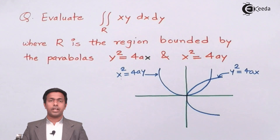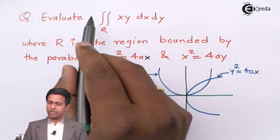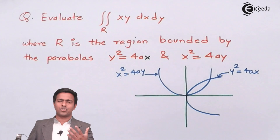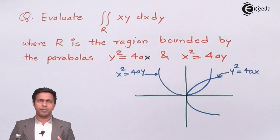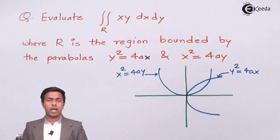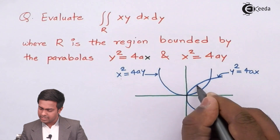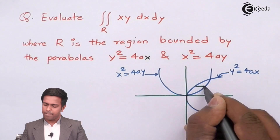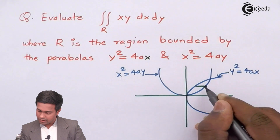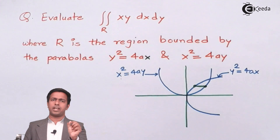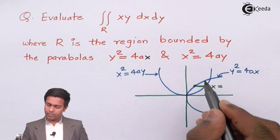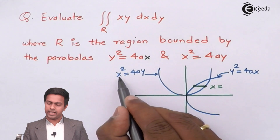To integrate over this region, we take a strip parallel to the x-axis (a horizontal strip). We find the endpoints of this strip — these are two endpoints in terms of x, since the strip is parallel to the x-axis.